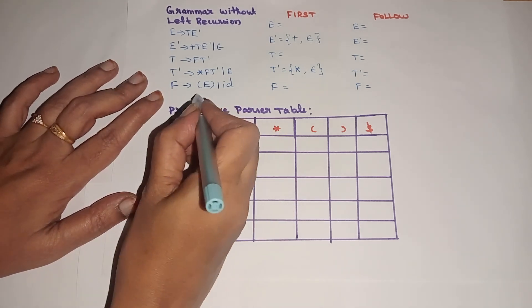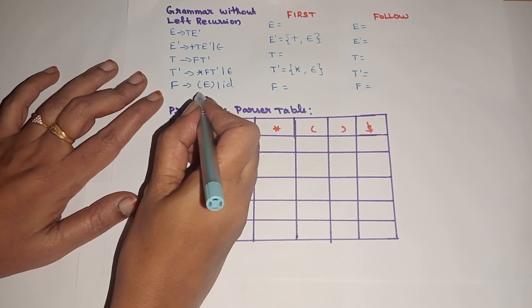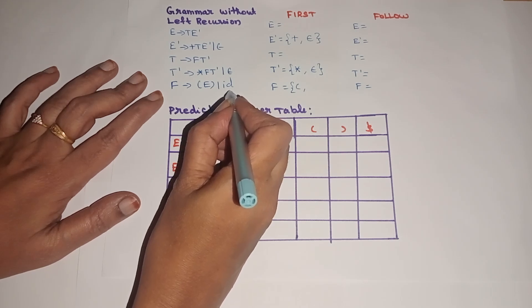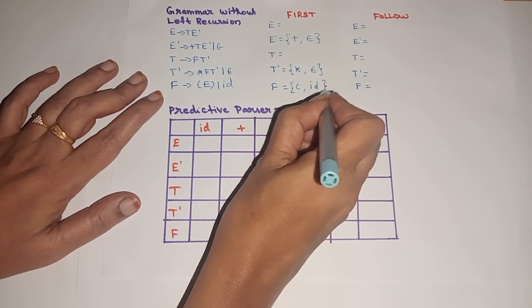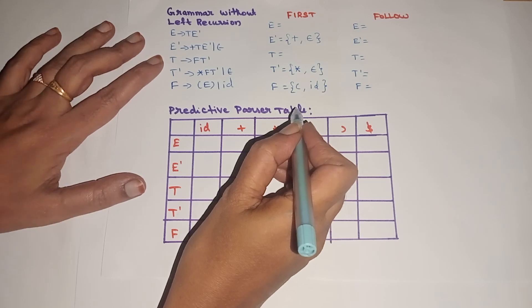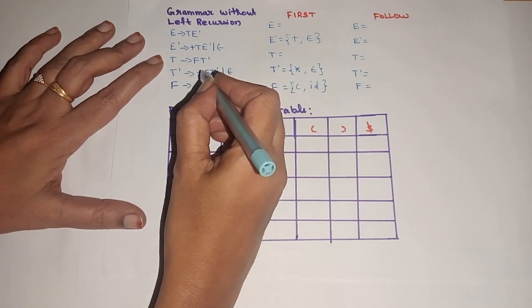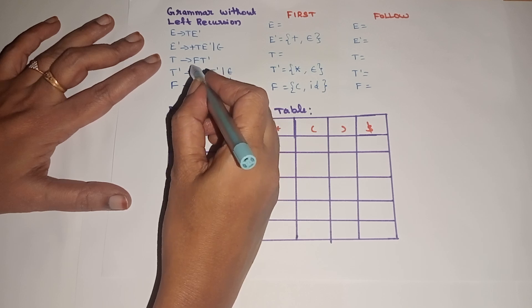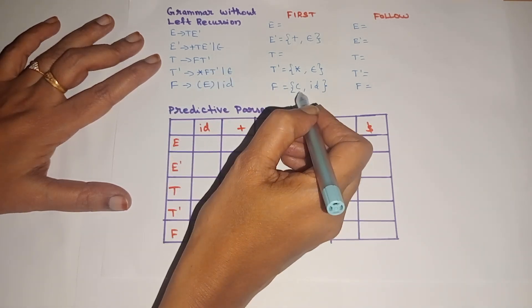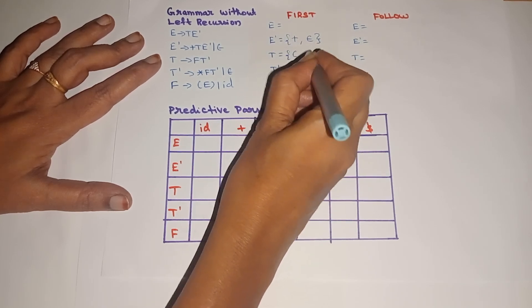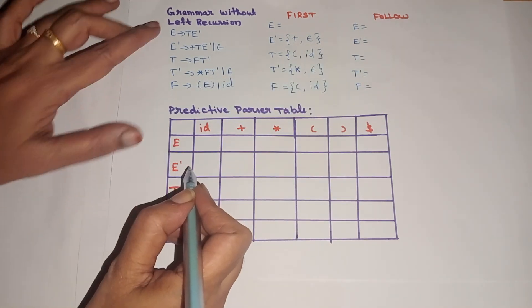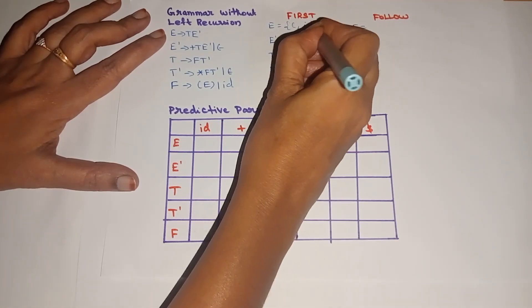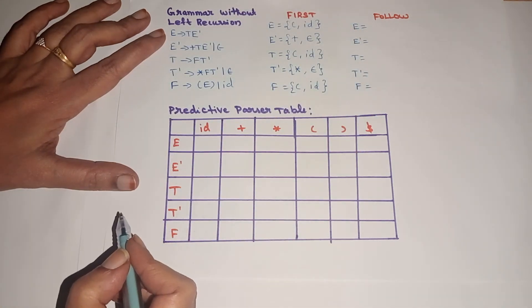Next, F tends to open parenthesis E close parenthesis or id. First symbol open parenthesis is a terminal, so first of F includes open parenthesis. id is also a terminal, so first of F includes id. Thus first of F is {open parenthesis, id}. For T tends to F T-dash, since first of F is {open parenthesis, id} and no epsilon, first of T is {open parenthesis, id}. Similarly, for E tends to T E-dash, first of T is {open parenthesis, id}, so first of E is also {open parenthesis, id}.